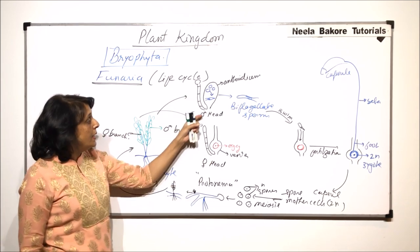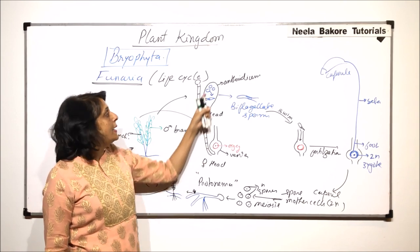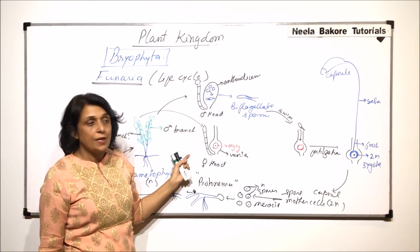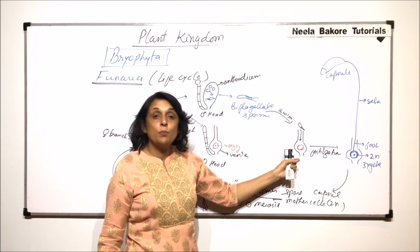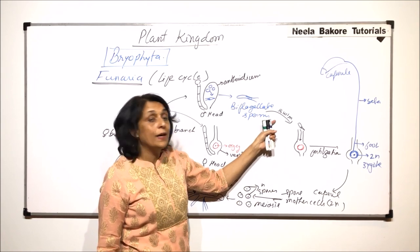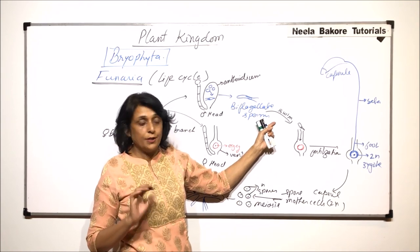This is haploid. The male head, female head, sex organs, all the structures are haploid. Gametes which are produced, they are haploid. And they are produced by simple mitotic division.